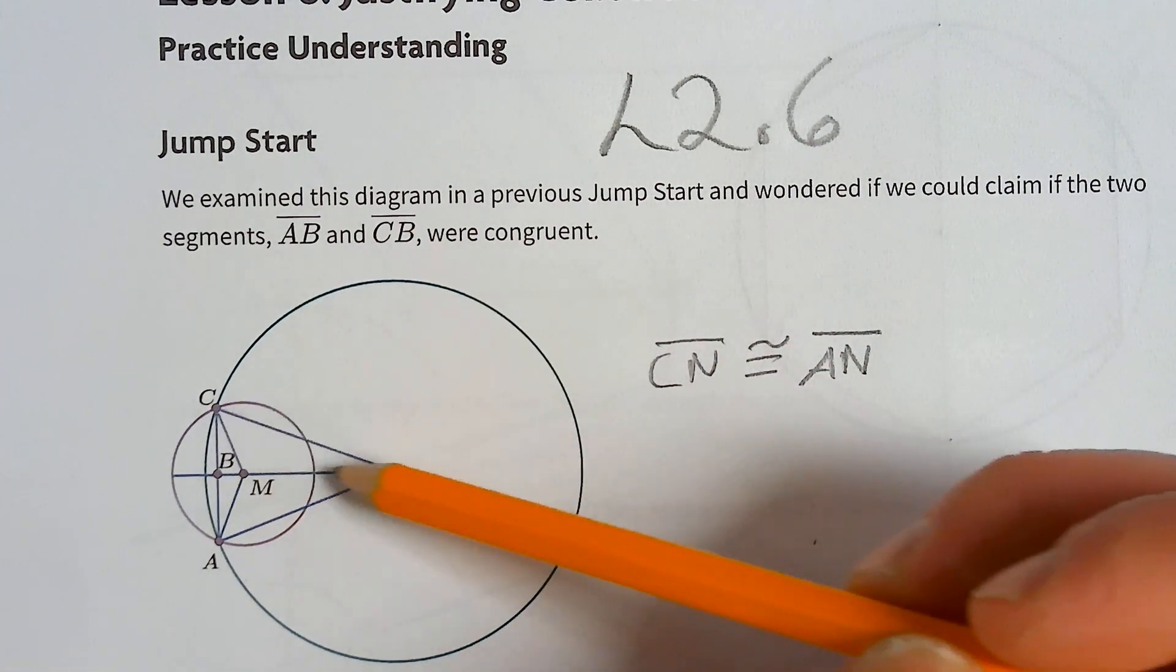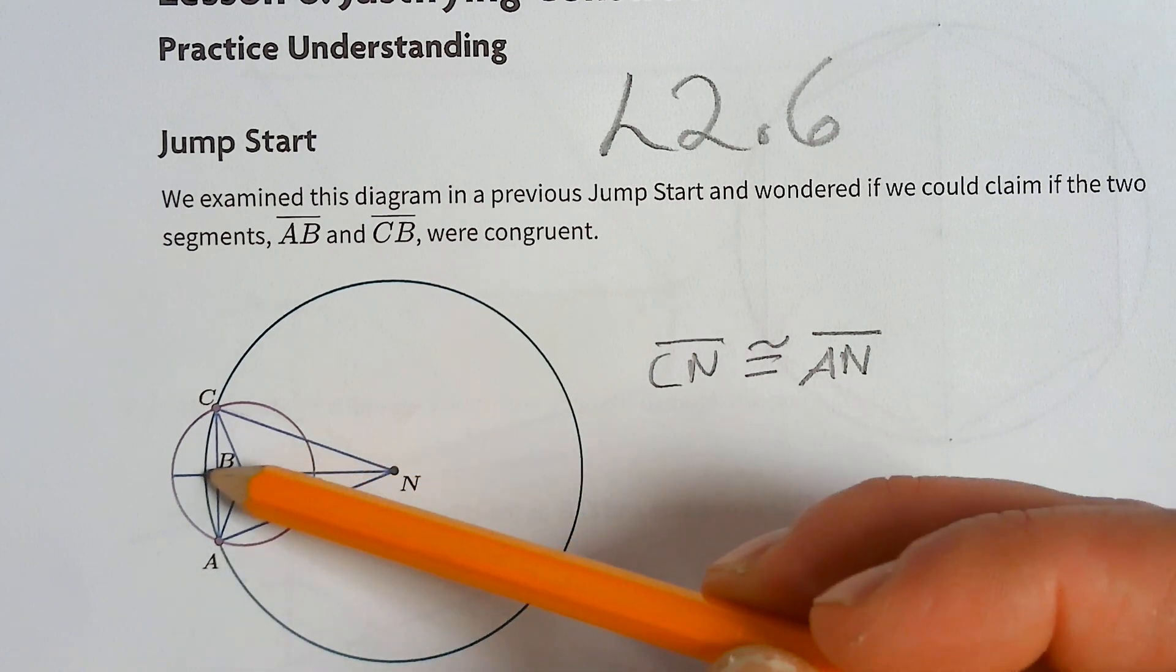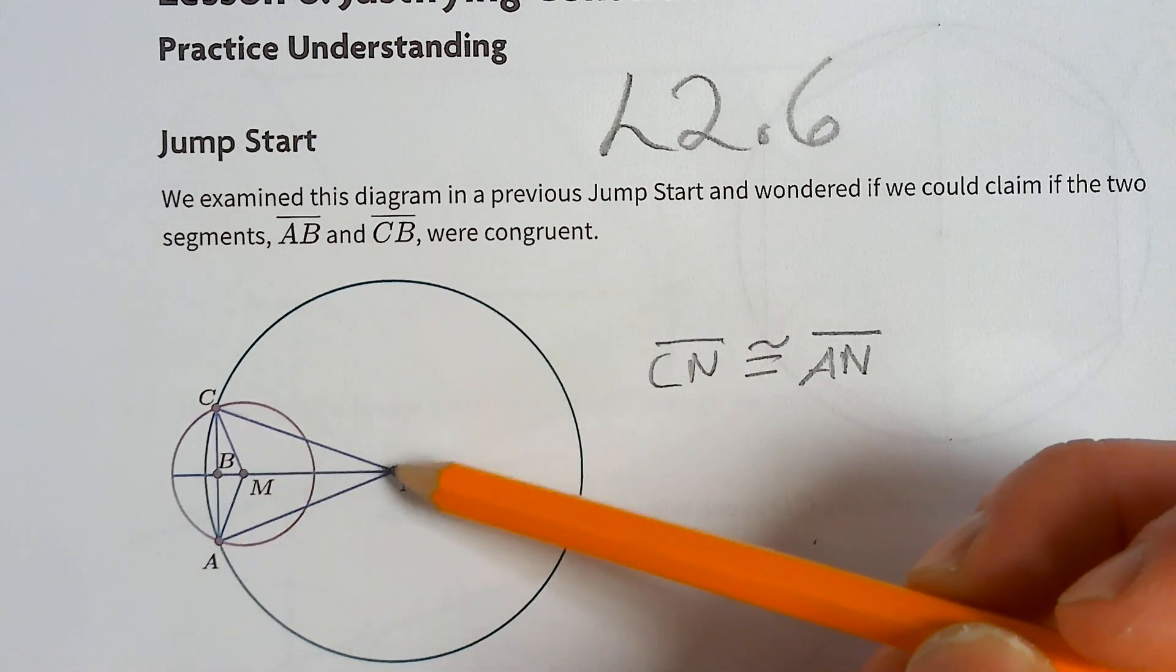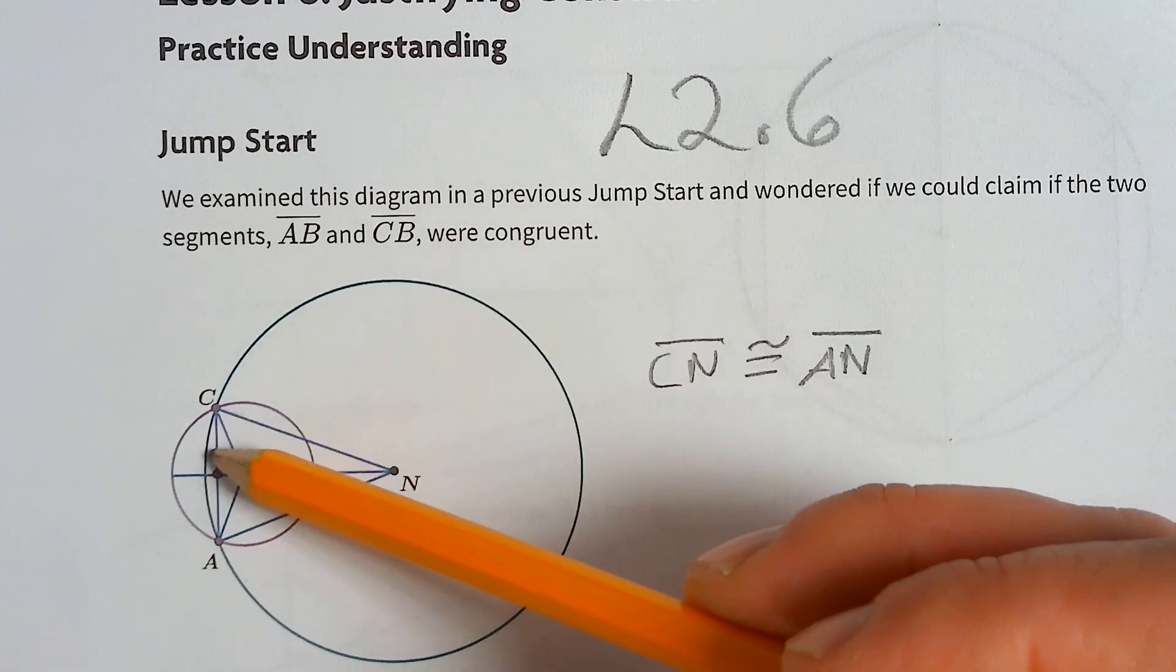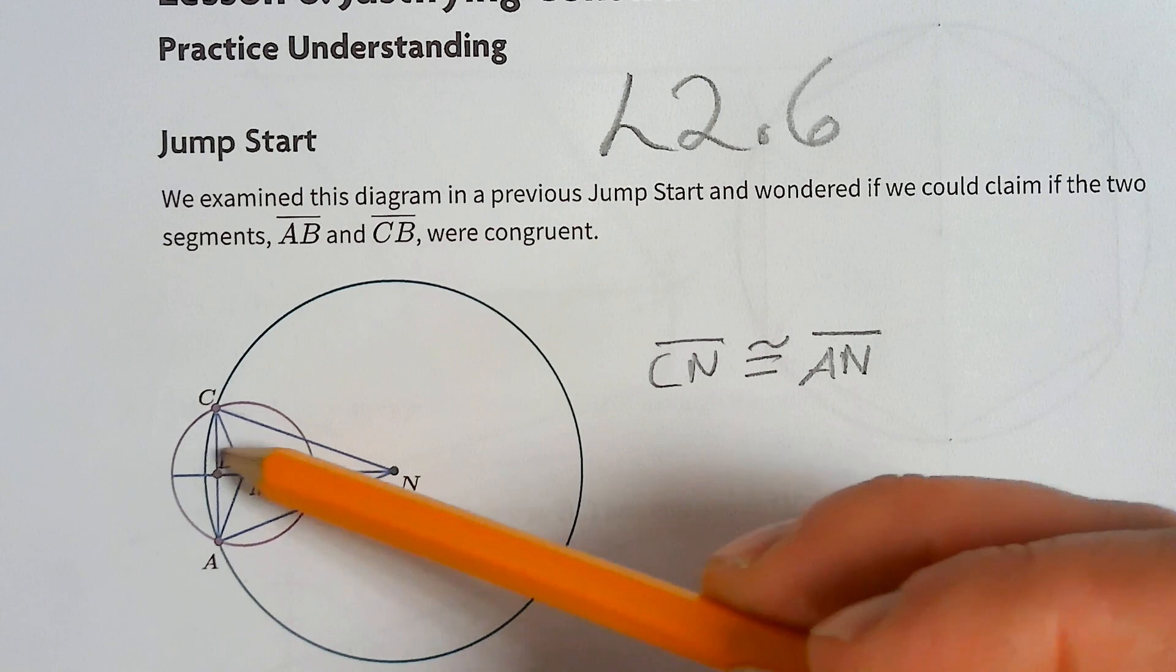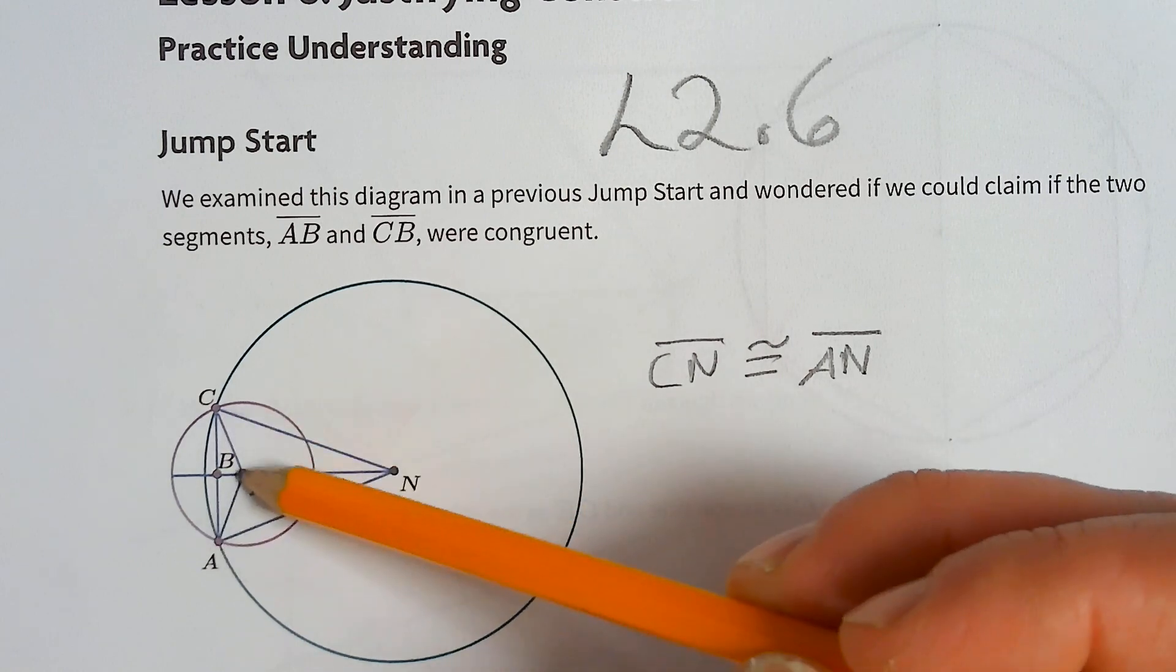We do know side side, we don't know any angles though, that's irritating. But if we actually leave that right looking triangle and do this arrow looking triangle, we actually know this is a radius of the small circle.